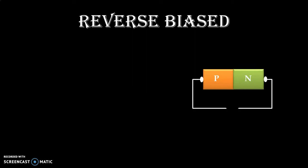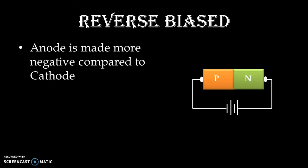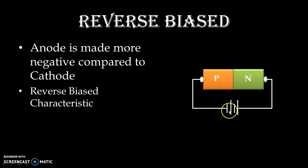Similarly, in reverse biasing, the terminals of the battery are reversed. The anode is made more negative compared to cathode. Here we can see that the anode is given negative voltage and cathode is given positive voltage. This condition is known as reverse biased, and the diode is said to be reverse biased.